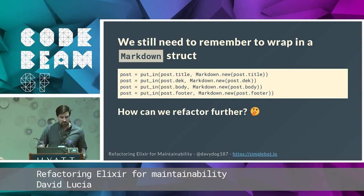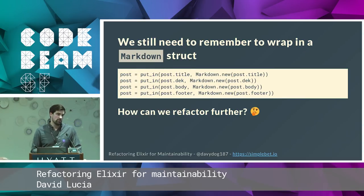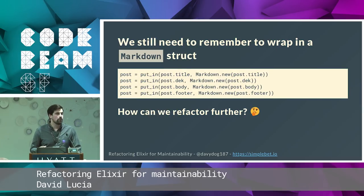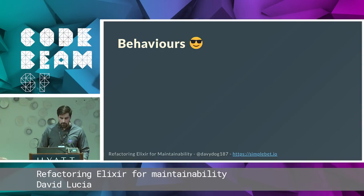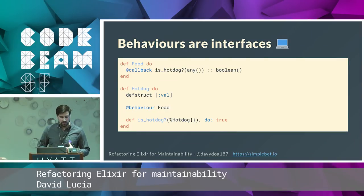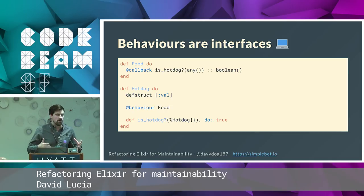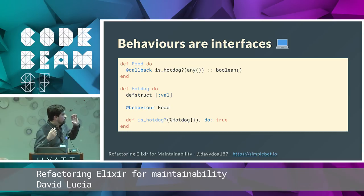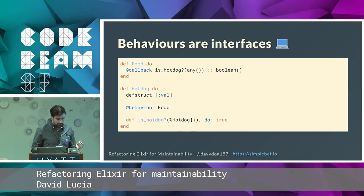That's really cool and we've removed a lot of duplication, but we can still do better. In that expanded example we had four different fields that required markdown structs, and now we have to wrap all of those fields in a markdown struct. We can make this cleaner and remove more duplication with behaviors. A behavior is an interface in Elixir — it's a common shape. Any module that has certain functions with the same inputs and same output types implements the interface. For Silicon Valley fans: a food behavior requires any module implementing it to implement the function isHotDog, which takes any term and returns a boolean.